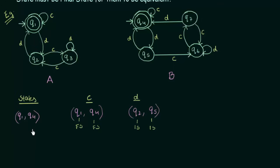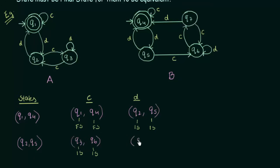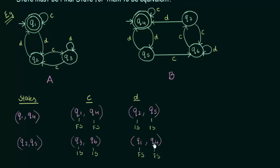We have to check for all pairs of states. Next, let's check the pair q2 and q5. On input c, q2 goes to q3 and q5 goes to q6 — both are intermediate states. On input d, q2 goes to q1 and q5 goes to q4 — both are final states. So again the pairs are the same kind, and so far the automata are equivalent.